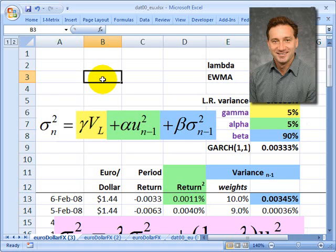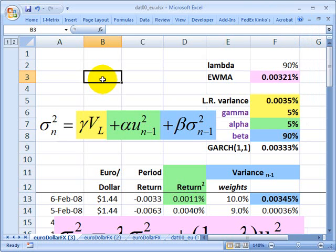Hello, David Harper of the Bionic Turtle with a brief introduction to an approach to estimating volatility that is extremely popular. It's called GARCH(1,1). GARCH is short for Generalized Autoregressive Conditional Heteroscedastic Model.